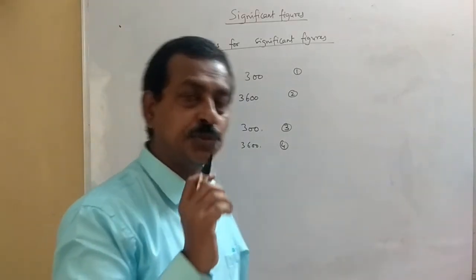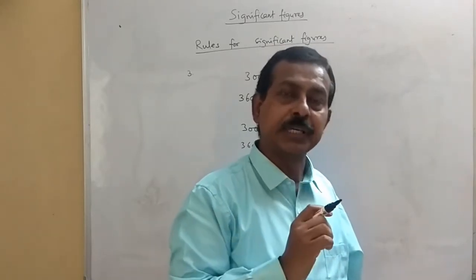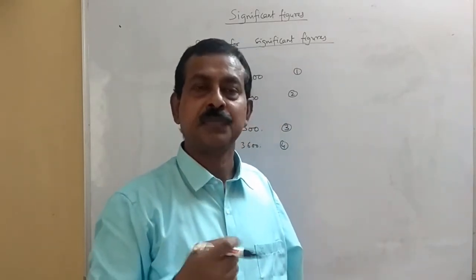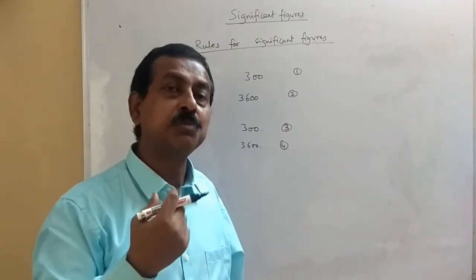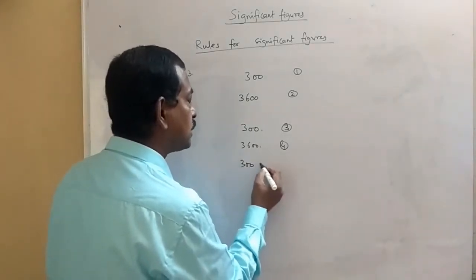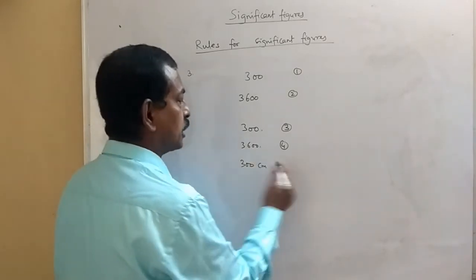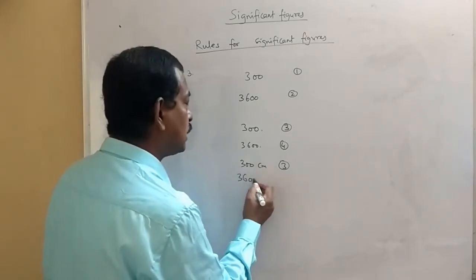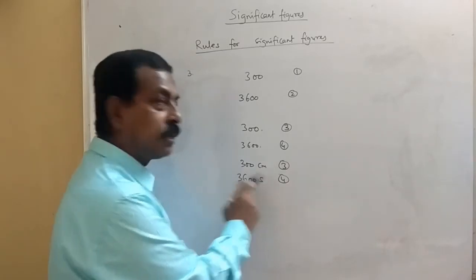Another rule: zeros appearing at the end of the number are significant if they are obtained from some measurement. For example, if I take 300 cm, then these zeros will be significant, so the number of significant figures will be 3. For 3600 seconds, it will be 4, because they are obtained from some measurement.